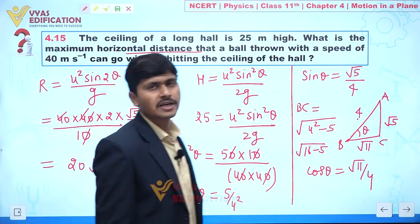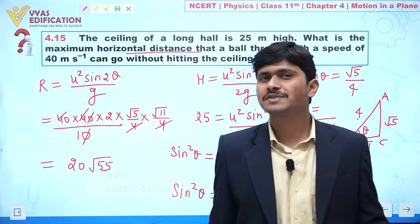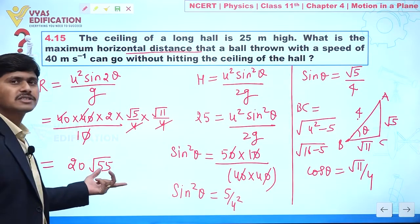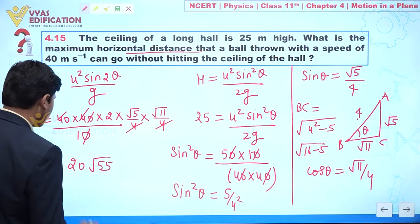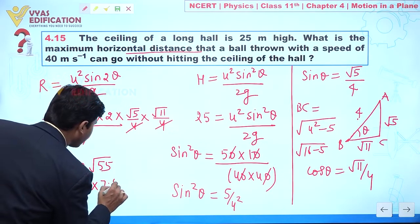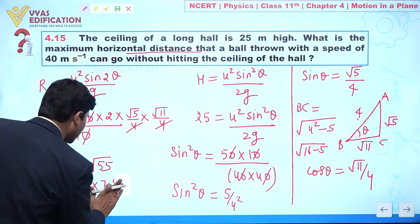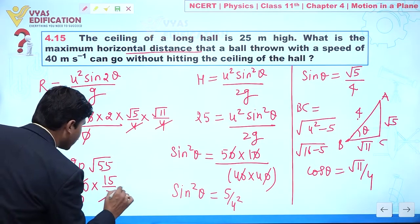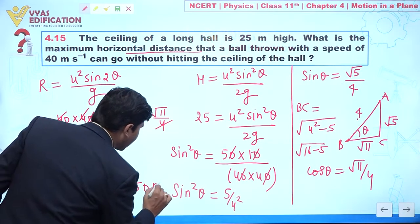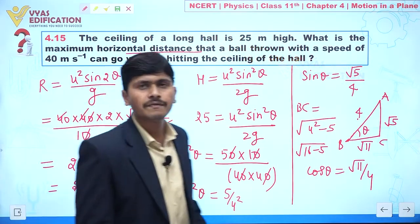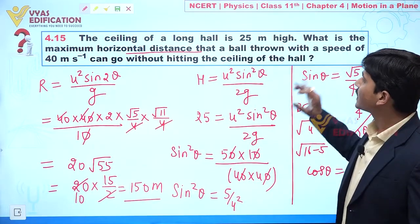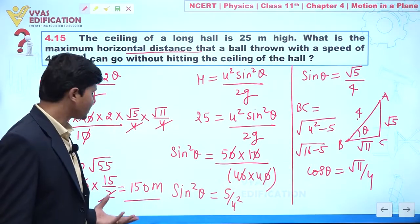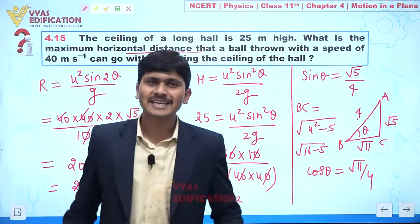Now, √49 = 7 and √64 = 8, so √55 ≈ 7.5. Therefore, range = 20 × 7.5 = 150 meters. So the maximum horizontal distance the ball can cover is approximately 150 meters.